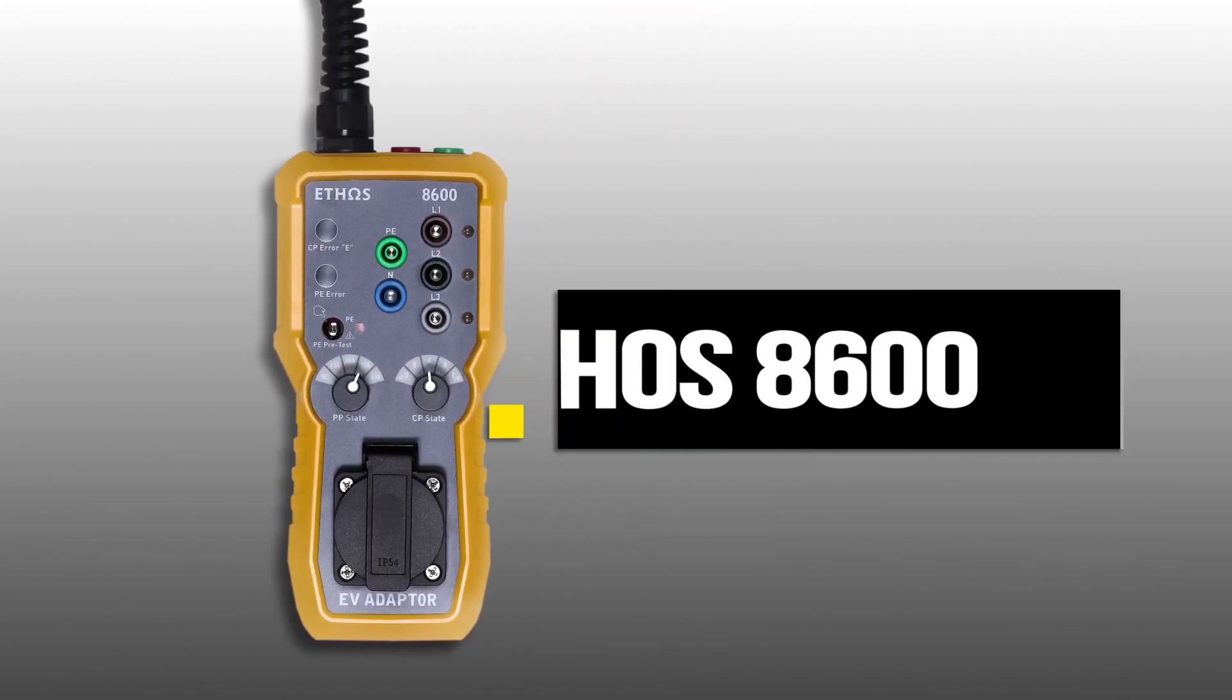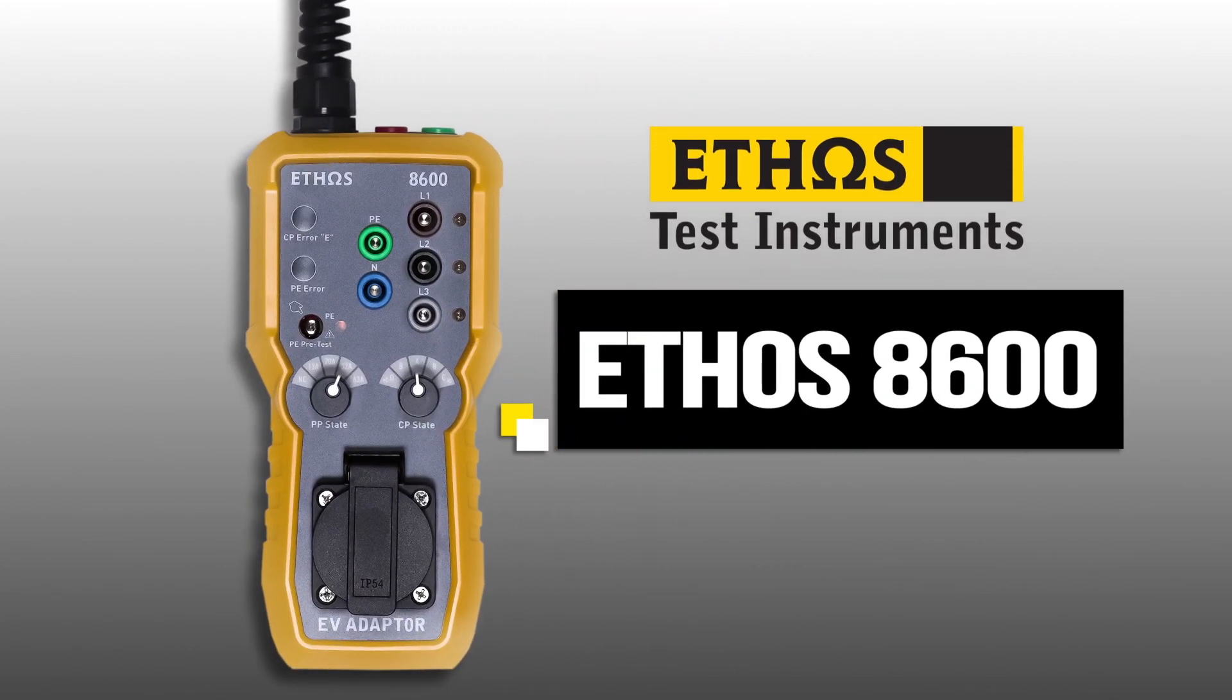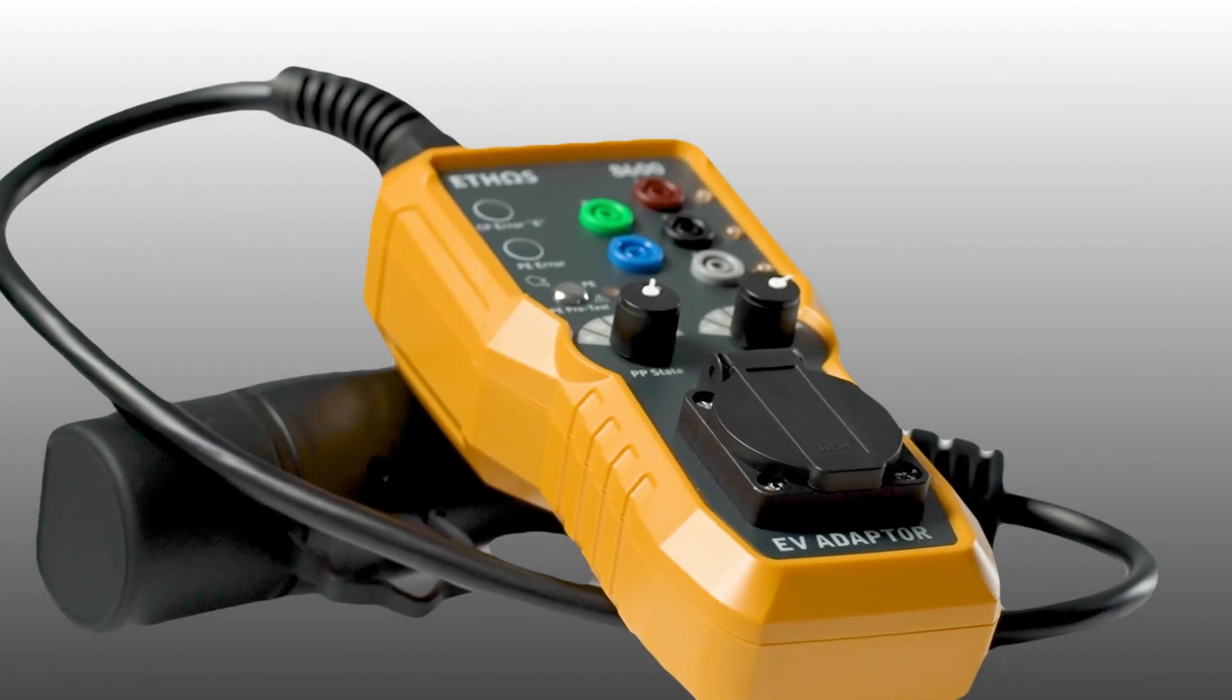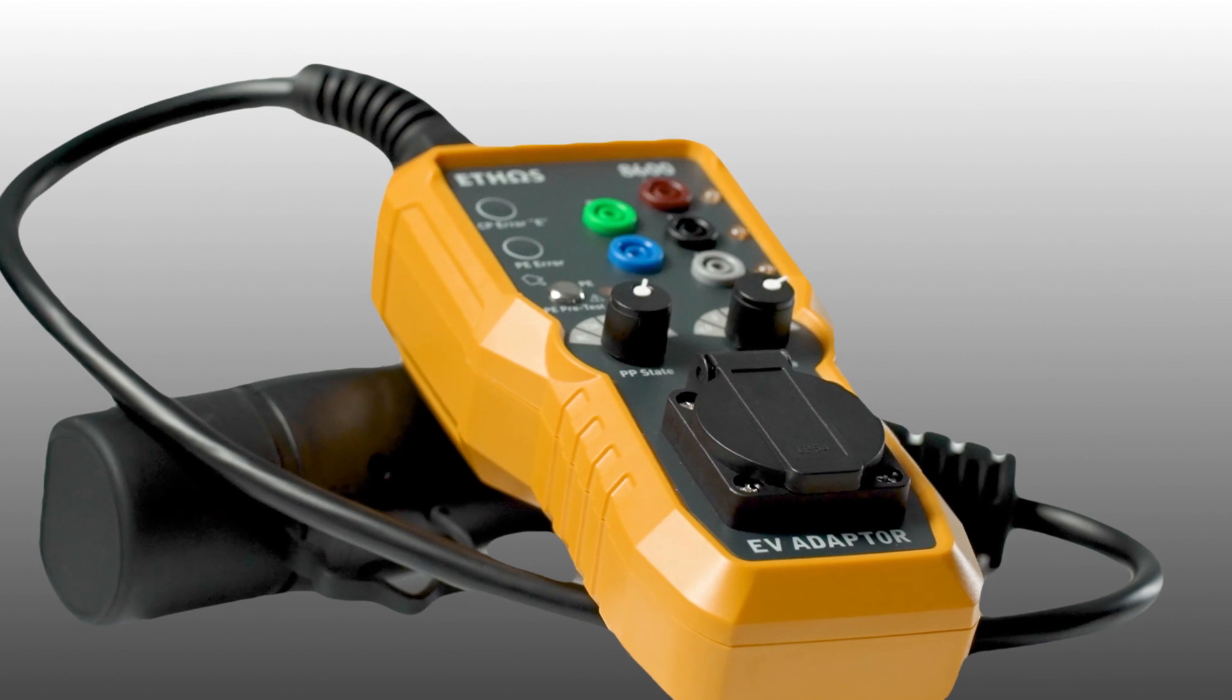The Ethos 8600 is a universal adapter for use in testing electric vehicle charge points. Most makes and models of either multi-function or individual tester will connect to this adapter.